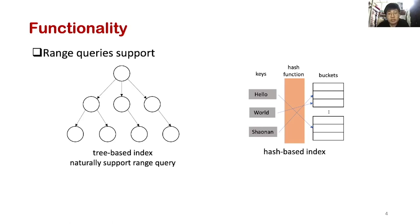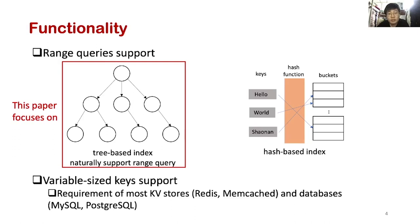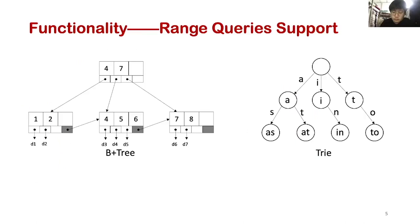Common indexes are tree-based indexes and hash-based indexes. Since tree-based indexes can naturally support range queries, our paper focuses on tree-based indexes. Variable-sized keys support is a requirement of most key-value stores and databases. In our work, we hope to support these two features at the same time.